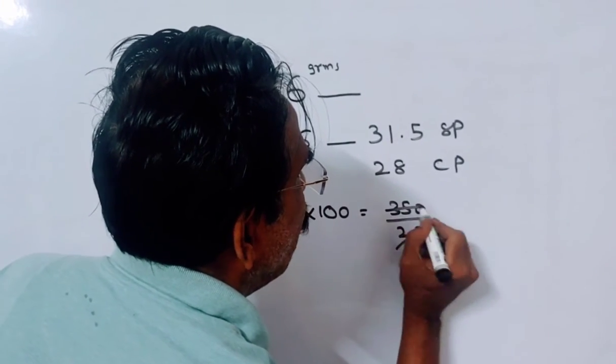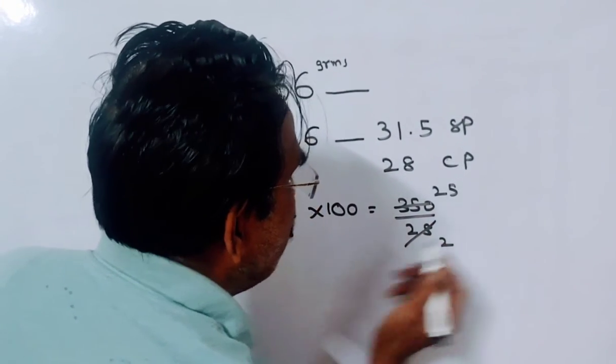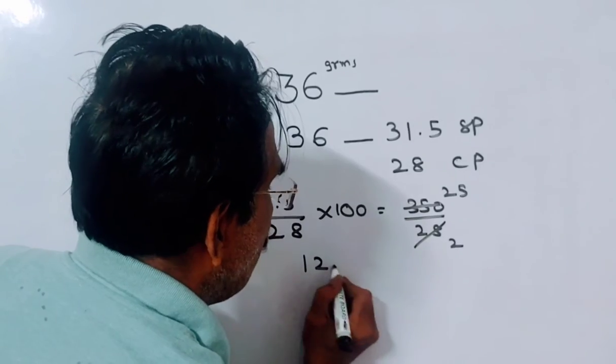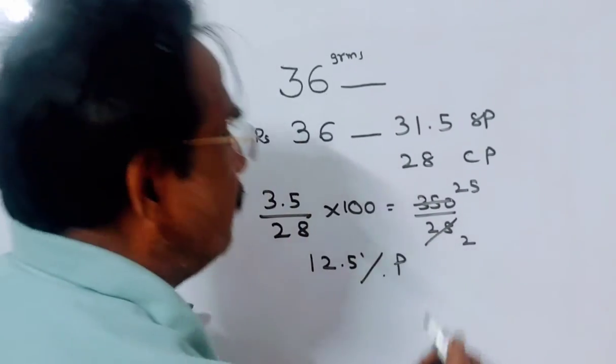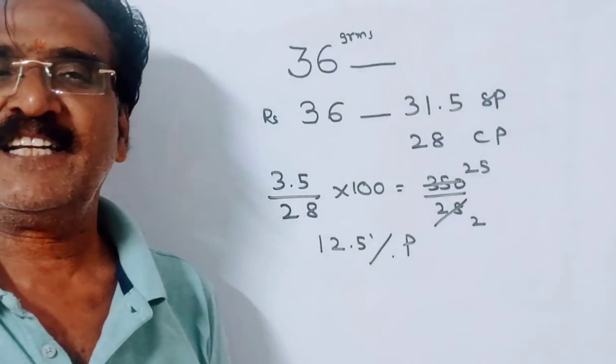Friends, 14.25. 25 by 2 means 12.5% profit. Friends, 12.5% profit. Okay friends, thank you. Have a nice day.